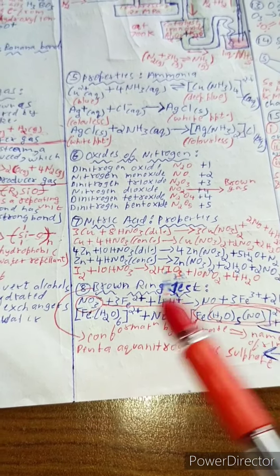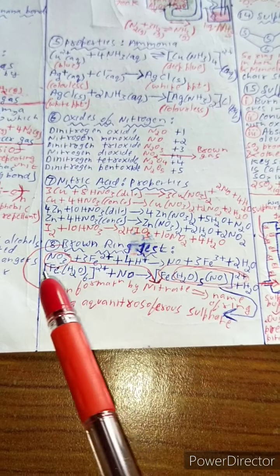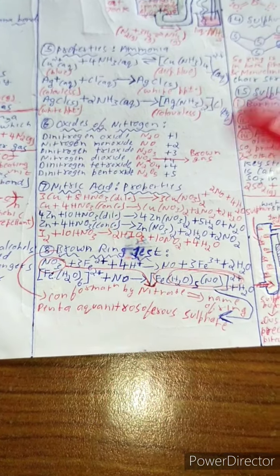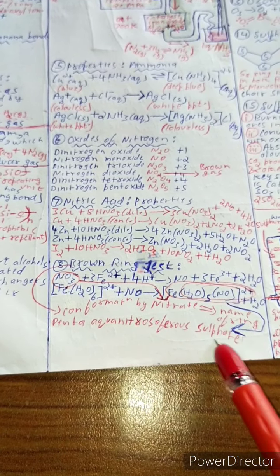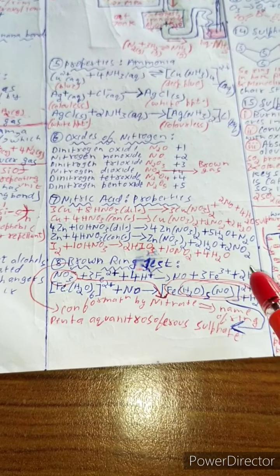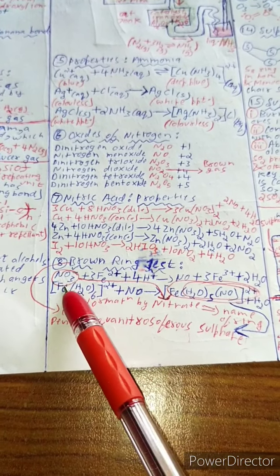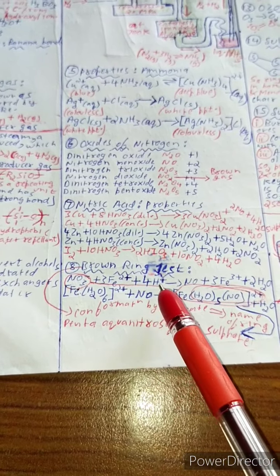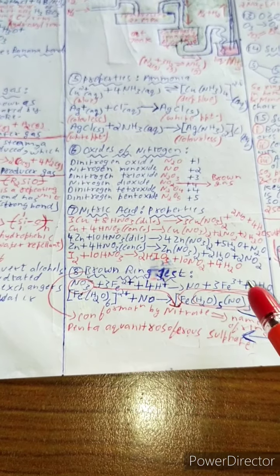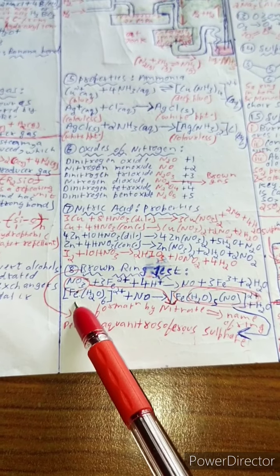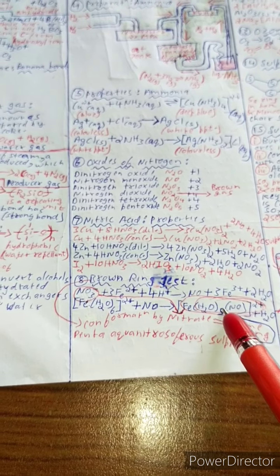Brown ring test: this is done for confirmation of nitrate ion. A brown ring is formed between the two layers. It is also called penta-aqua nitrosoferrous sulfate. The reactions involved are: NO₃⁻ + 3Fe²⁺ + 4H⁺ → NO + 3Fe³⁺ + 2H₂O, and [Fe(H₂O)₆]²⁺ + NO → [Fe(H₂O)₅(NO)]²⁺ + H₂O.